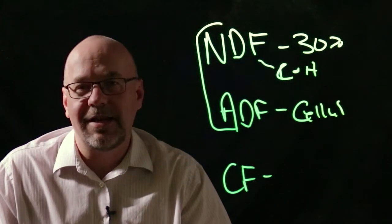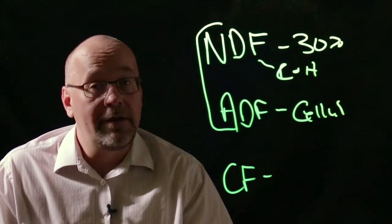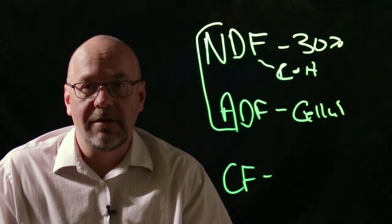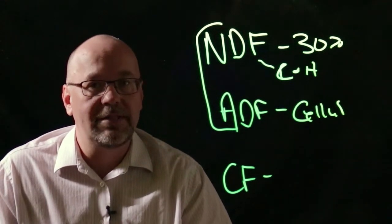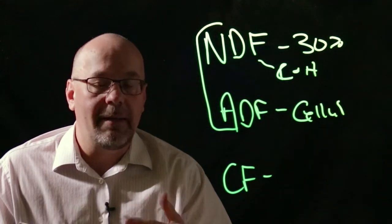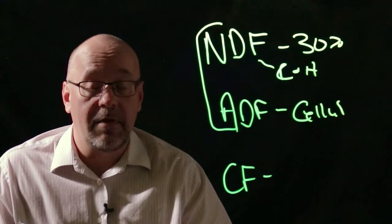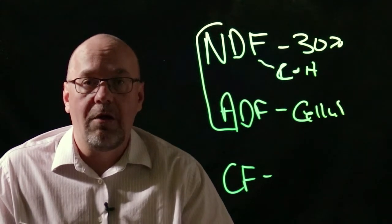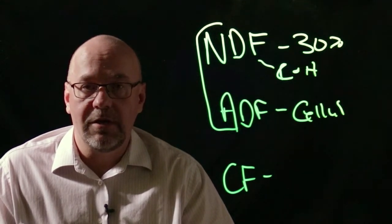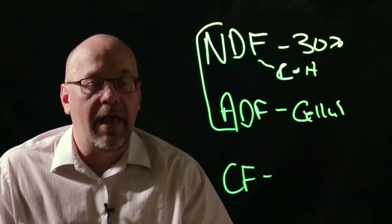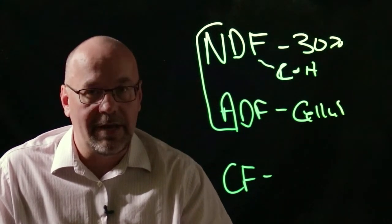So what does this tell us in the end? Number one it tells us that Dakota Gold has less fiber than the non-poet DDGs. And from a nutrition standpoint this is important especially when we're looking at applications for the monogastric species in which fiber is a main limiting component for how much DDGs we include in the diet. If we can keep a little bit lower fiber we can include more, have additional cost savings, and still maintain performance.